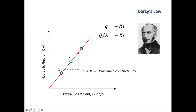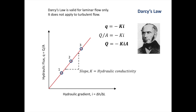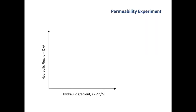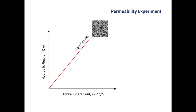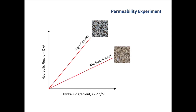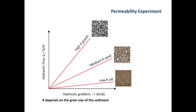Remember that the hydraulic flux equals the discharge divided by the area, so we can rearrange the equation as Q equals minus KIA. Notice the minus sign in the equation — it is there to show the direction of groundwater flow, which is assumed to be from left to right. It's very important to remember that Darcy's law is valid for laminar flow only; it does not apply to turbulent flow. If we rerun our permeability experiment using different materials, gravel has a high hydraulic conductivity and would give quite a steep slope, whereas sand and silt would form gentler slopes. The permeability or hydraulic conductivity of the material depends to a large extent on the grain size.